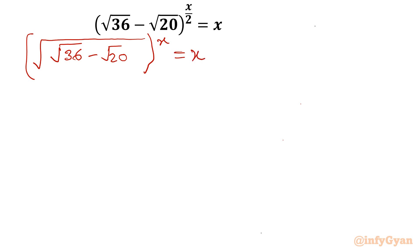By the property of exponent, a power b times c can be written as a power c times b, or a power c, whole power b. This is what I have done here. So x by 2 means 2 will be as a square root.